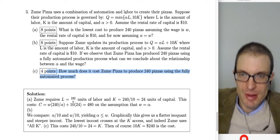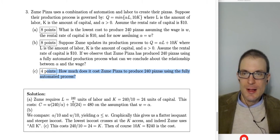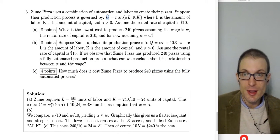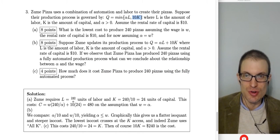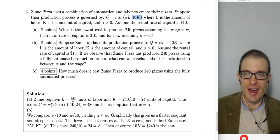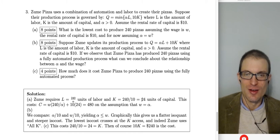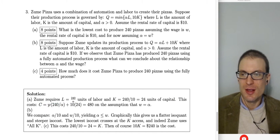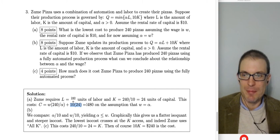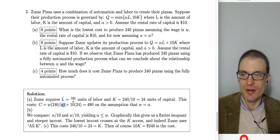For perfect complements, to produce 240 pizzas with no waste: αL = 240 and 10K = 240. So L = 240/α and K = 24 units of capital. The cost is W × (240/α) + 10 × 24. Since we assume W = α, the wage and alpha cancel, giving 240 + 240 = 480. So the minimum cost is $480.